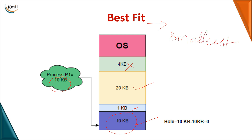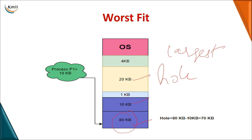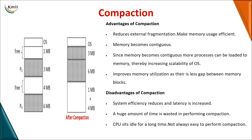In worst fit, you search through memory and allocate the process to the largest available hole. So even if 20 KB and 10 KB blocks are available, you allocate to an 80 KB block. With first fit or worst fit, you may end up with empty fragments between processes, which leads to external fragmentation.